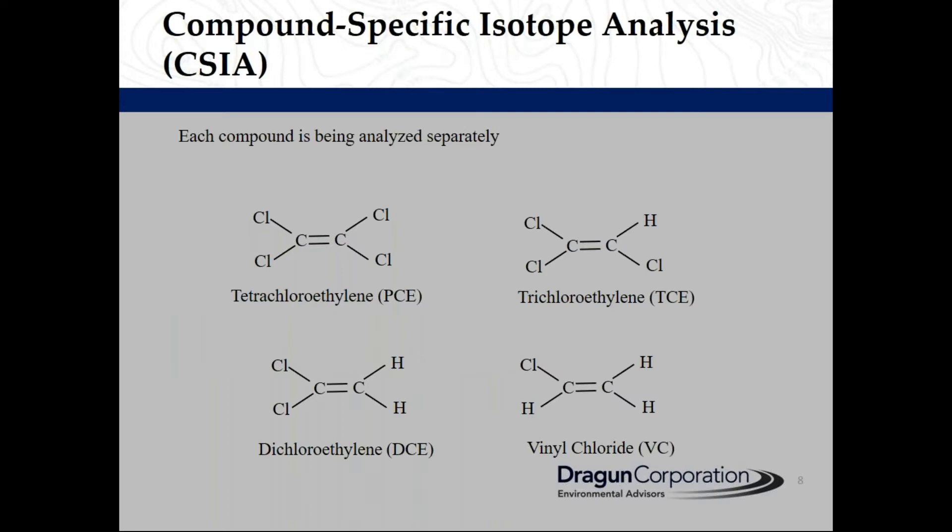What is compound specific isotope analysis? It is a method in which each compound is analyzed for its isotopes individually. For example, assume a groundwater sample that contains tetrachloroethylene or PCE, trichloroethylene, dichloroethylene, and vinyl chloride, which all have carbon and chlorine isotopes. Without CSIA we get a bulk value for carbon and chlorine isotopes, but with CSIA each compound is first separated and then analyzed for its stable isotopes.